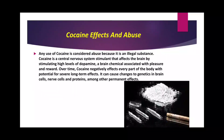Any use of cocaine is considered abuse because it is an illegal substance. Cocaine is a central nervous system stimulant that affects the brain by stimulating high levels of dopamine, a brain chemical associated with pleasure and reward. Over time, cocaine negatively affects every part of the body, causing changes to genetics in brain cells, nerve cells, and proteins, among other permanent effects.